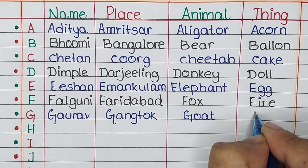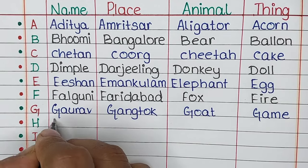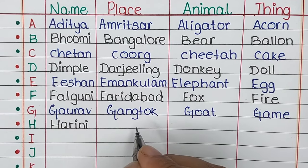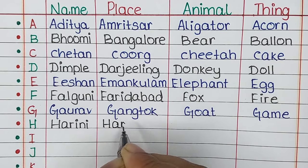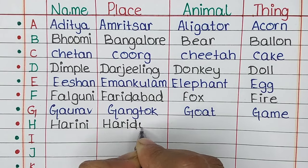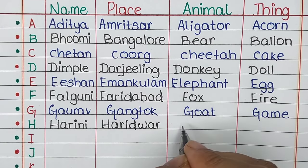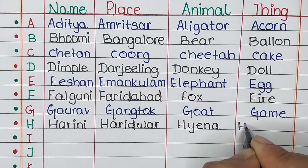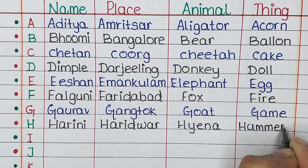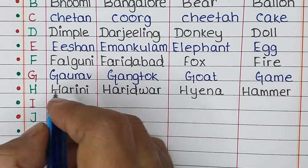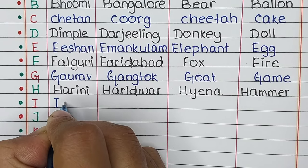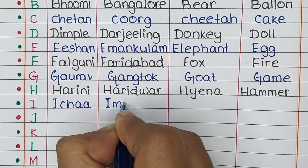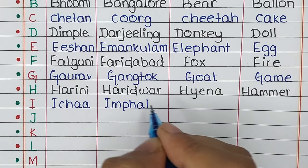The animal is Goat and the thing is Game. Next is letter H. The name is Harini, the place is Haridwar, the animal is Hyena, and the thing is Hammer.